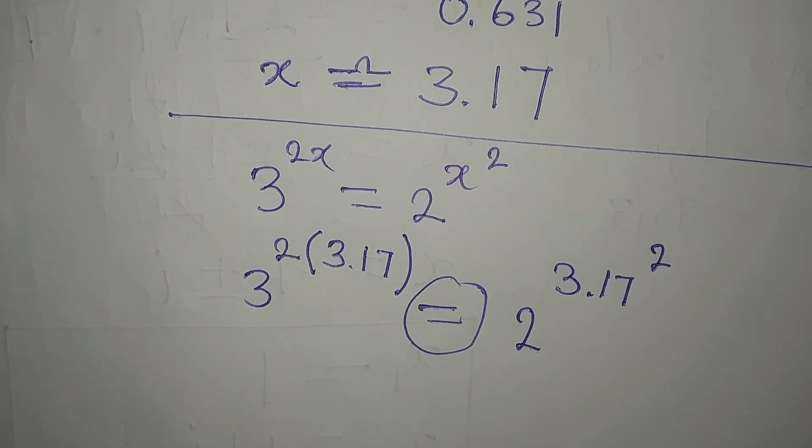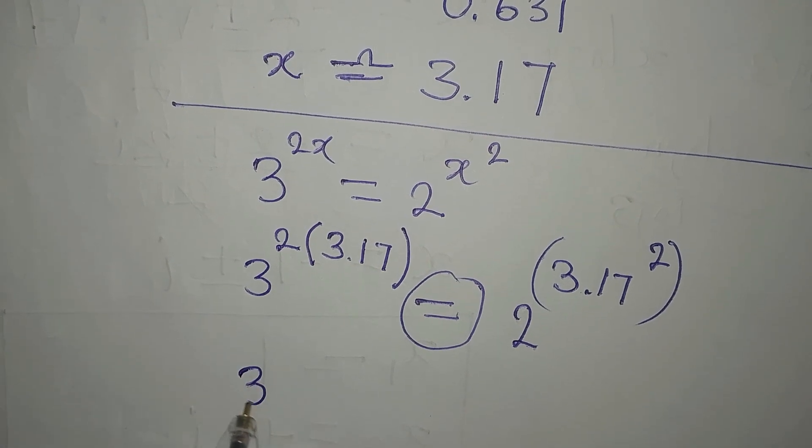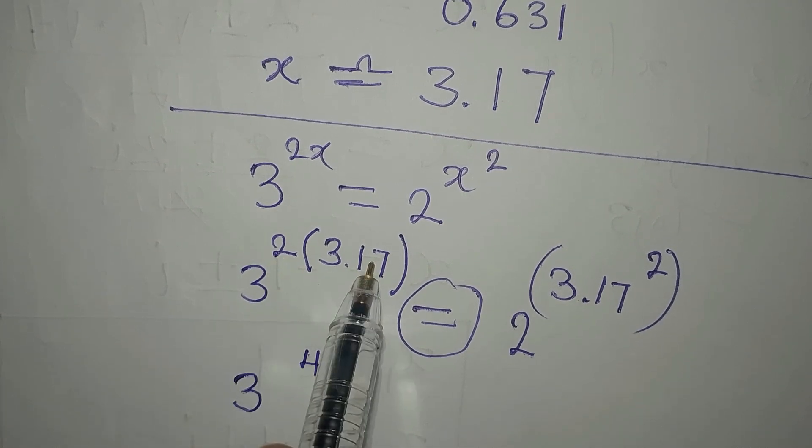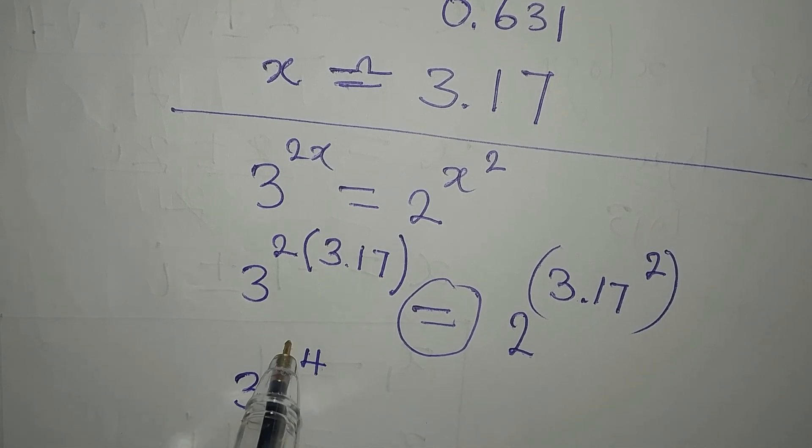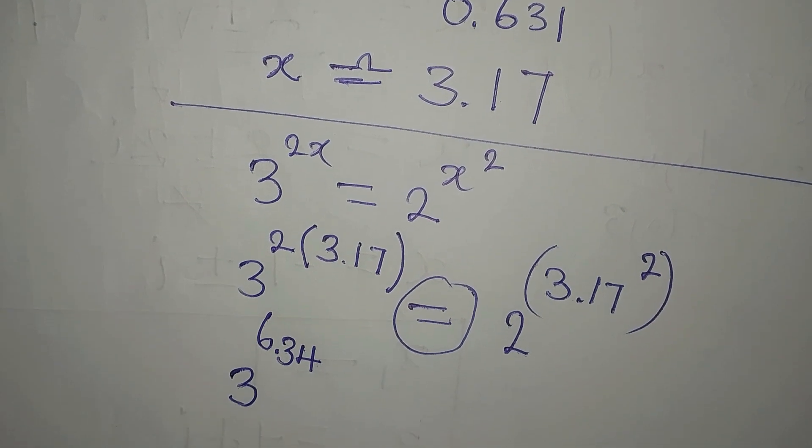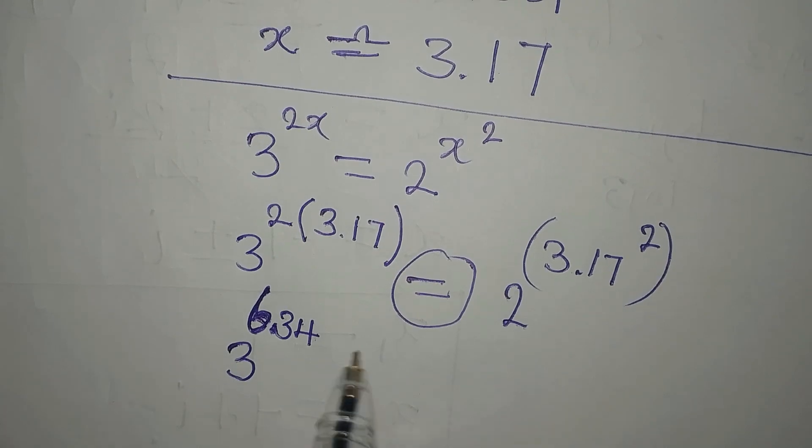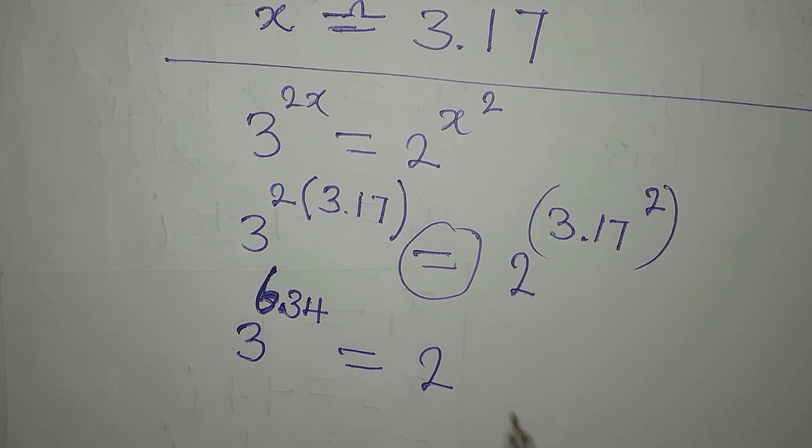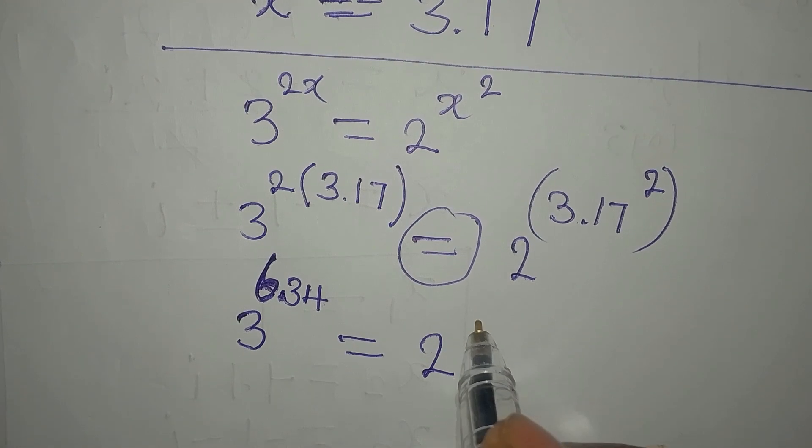Let's multiply this. We have 2 times 7 that is 14, then 2 times 1 is 2 plus the one we moved, that will give us 3, then 2 times 3 that will be 6 and there is a decimal point here. So this is 6.34. On the other hand we will square this. Let's use calculator for that: 3.17 squared.